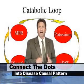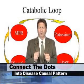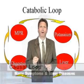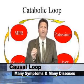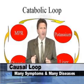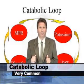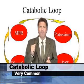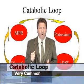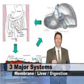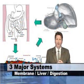We'll connect compromised membrane power, potassium, liver function, digestion, and lipid toxins into a causal loop that drives many symptoms and many diseases. We call this very common pattern the catabolic loop. It's a very strong, self-reinforcing metabolic lock pattern, which is one tough nut to crack. The catabolic loop involves three different systems: cell membrane, the liver, and digestive system.